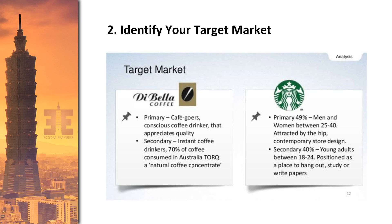Number two, identify your target market. You want to know down to a science who your ideal target market is. For example, Starbucks' primary target is 49% men and women ages 25 to 40, attracted by the hip contemporary store design. Their secondary target is young adults 18 to 24, positioned as a place to hang out, study, or write papers. They have two targets, so they create two different types of marketing messages — one for each audience — because they're two different types of audiences.